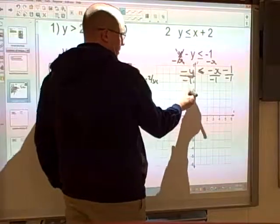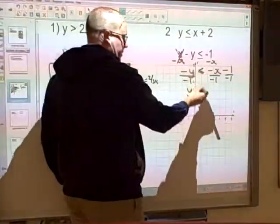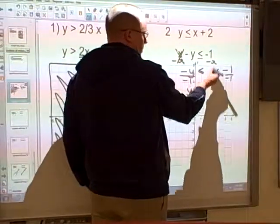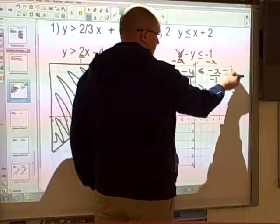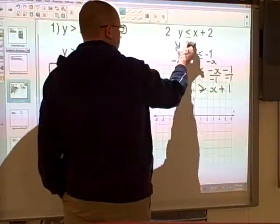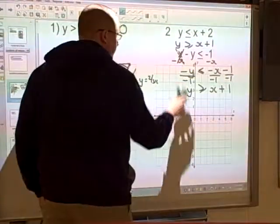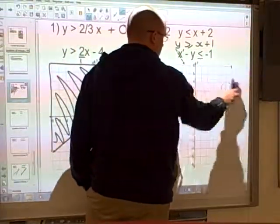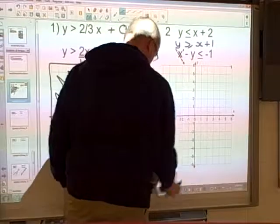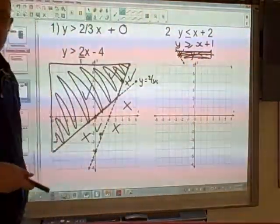So the two negatives cancel here and give me a y. As I just divided by a negative number, I need to flip this inequality. Two negatives make a positive, and negative 1 divided by negative 1 is positive 1. So my other equation I could write is y is greater than x plus 1.